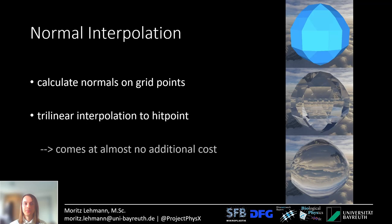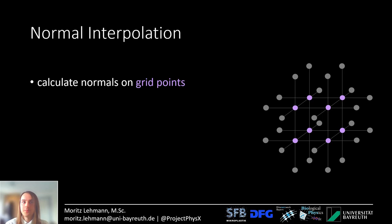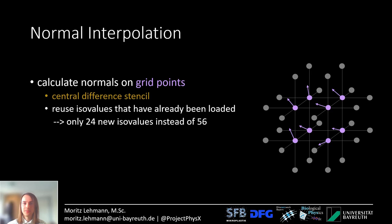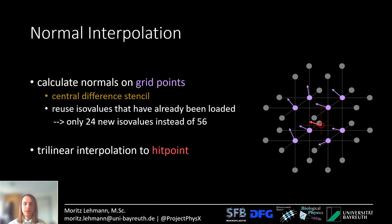The two steps here are to calculate the normals on the grid points and then to do trilinear interpolation to the hit point. The interpolation is only done once after the ray has intersected a triangle, so it comes at almost no additional cost. For the interpolation, I use a central difference stencil on the ISO values and reuse the ISO values already loaded for the marching cubes cell — so I only have to load 24 additional ISO values instead of the full 56. Finally I do trilinear interpolation to the hit point.